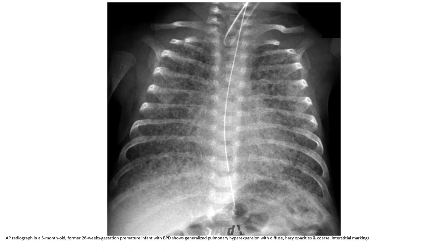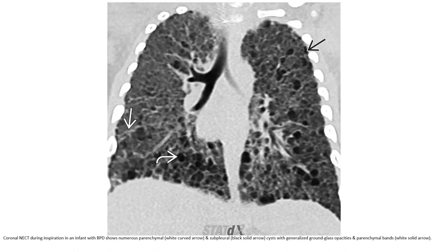This is the chest radiograph in a five-month-old former 26-week gestation premature infant with bronchopulmonary dysplasia, showing generalized pulmonary hyperexpansion with diffuse haziness and coarse interstitial markings. Non-contrast enhanced CT in inspiration in an infant with bronchopulmonary dysplasia shows numerous parenchymal and subpleural cysts with generalized ground glass opacity and parenchymal bands.